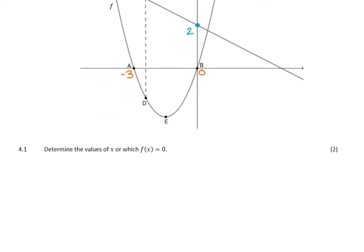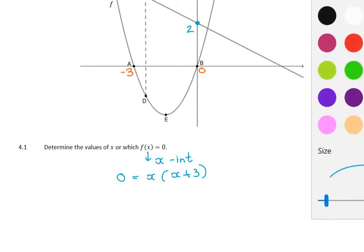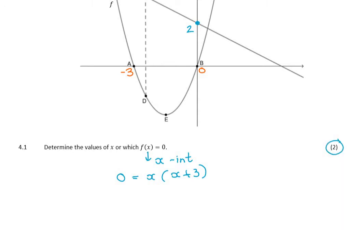And lo and behold, the first question is, determine the values of x for which f(x) is 0, which are my x-intercepts of my parabola. So 0 equals x(x+3), and you'll see that it's only for 2 marks, because if you just wrote straight down those coordinates, I would give you 2 marks. Please don't make the mistake of multiplying out. You can, but then you have to factorize again, and it's a waste of time. So I get x is 0, or x is minus 3, as said.